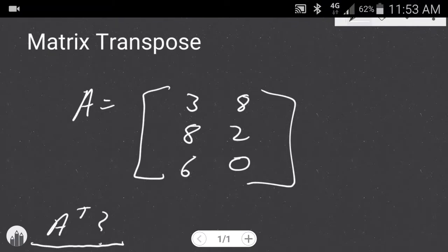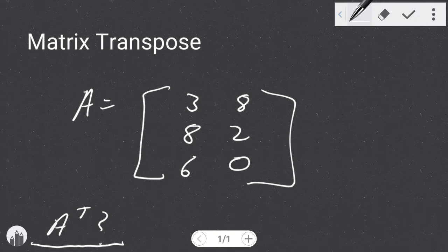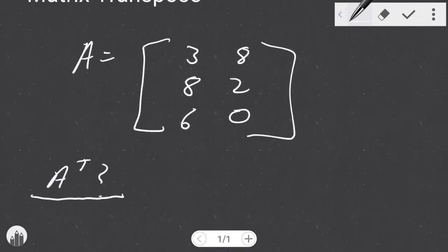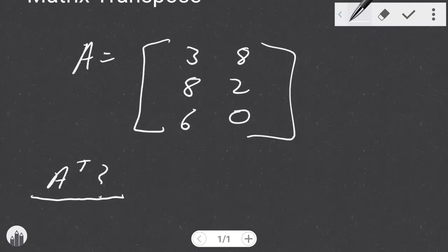Say you have a matrix and they ask you to find out the matrix transpose. What would the transpose be? Well, the transpose of a matrix is simply said, just conversion of rows into columns and columns into rows.